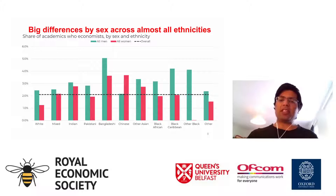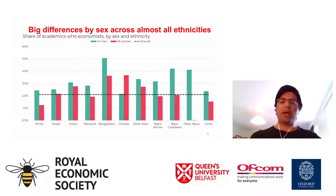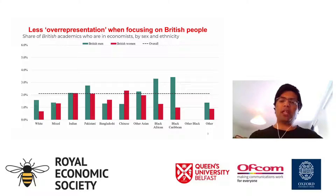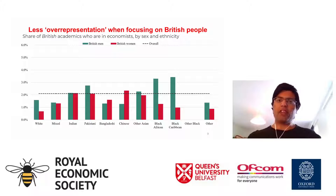One important thing is that this includes both British individuals and those who've come to the UK. Economics is actually very international compared to other areas of UK academia. If you focus only on individuals from British backgrounds, the apparent overrepresentation in some groups melts away. For example, Bangladeshi individuals look very overrepresented compared to their share in academia as a whole, but that's mainly individuals from Bangladesh directly rather than people with Bangladeshi heritage from the UK. So thinking about what happens to UK students making their way through economics, their probability of getting through is not super high.